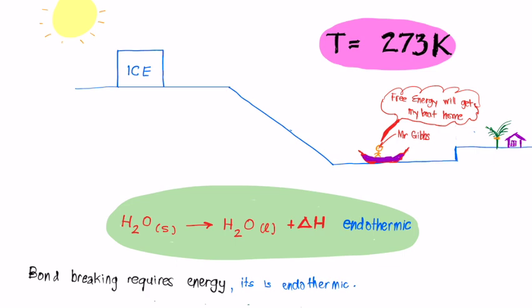In this simple world, the temperature is 273 Kelvin. You should know that that is zero degrees Celsius. The sun is out, and we have a block of ice. So my first question to you is, what's going to happen to our block of ice? Is it going to melt, or is it going to stay put? Mr. Gibbs here in his boat is pretty confident that free energy will get my boat home. And you see his little house over here with the palm tree. We have created this hypothetical world. In this hypothetical world, it's 273 Kelvin, a block of ice up there, house with a palm tree, and Mr. Gibbs in his boat, saying that he's going to get home because of free energy.